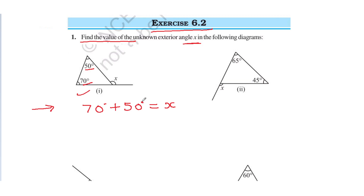So now, 70 degrees plus 50 degrees — what will we get? 120 degrees. So the value of x is 120 degrees.